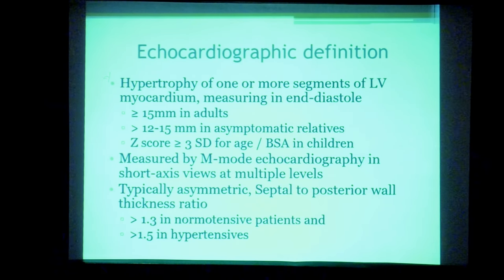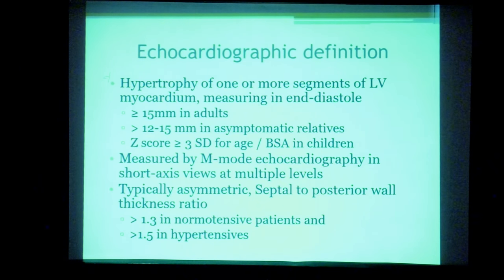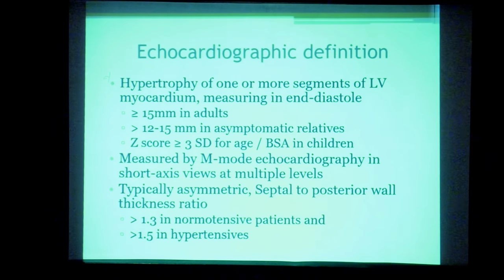The echocardiographic definition for a presumptive diagnosis of HCM requires demonstration of hypertrophy in one or more segments of the LV myocardium, measured in diastole with a thickness of ≥15 mm in adults. A range of 12–15 mm is used for screening of asymptomatic relatives. In children, a Z-score of more than 3 standard deviations for age and body surface area is used. Measurements should be done in M-mode echocardiography, preferably in short axis views and at multiple levels of the myocardium.